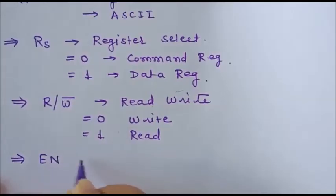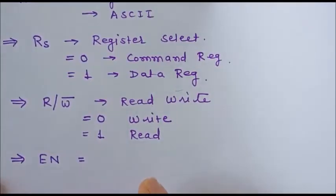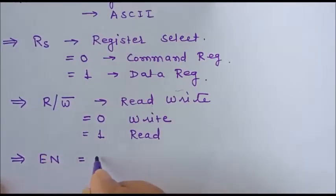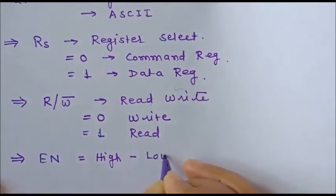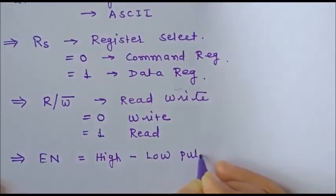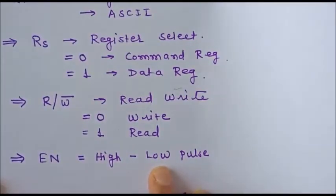The third control signal is Enable. Whenever we want to latch data, we first place the data or command on the data bus D0 to D7, and then we send the Enable signal. For a write operation, the Enable signal is a high-to-low pulse — we make the terminal high and then, after some delay, send logic 0 on the Enable signal.